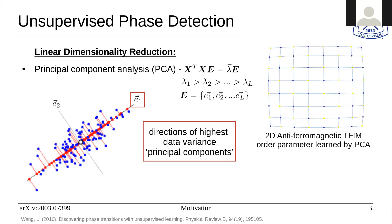For example, this is a 2D antiferromagnetic transverse field Ising model order parameter that is learned by PCA, and it's the staggered magnetization. Blue and yellow are opposite signs. It finds for this square lattice the staggered magnetization, which is of course the correct order parameter of the transverse field Ising model when it's antiferromagnetic.